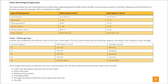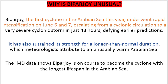Now let's see why Biparjoy is so unusual. It is the first cyclone of this year in the Arabian Sea. As you may know, cyclones are much less frequent in the Arabian Sea. Most cyclones are seen on the eastern side — the Bay of Bengal — because wind direction mostly flows that way, which is why Odisha, Andhra Pradesh, and Bengal are more frequently hit. It is very rare for India to be hit by a cyclone from the Arabian Sea side.